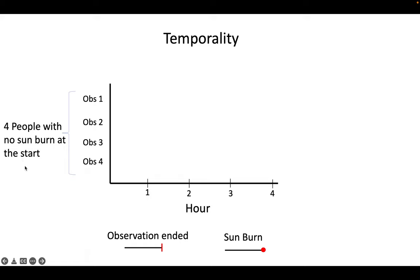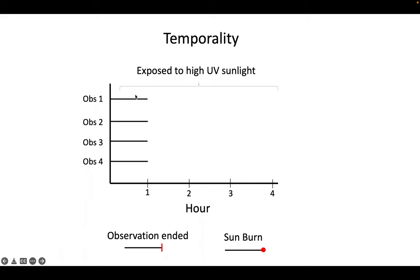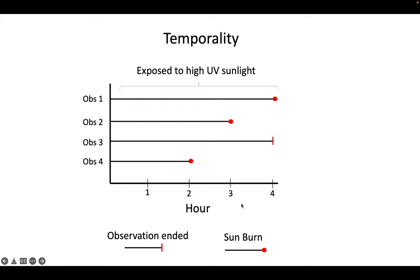Here I'm representing this with four people with no sunburn at the start, being followed for a number of hours — everyone with no sunburn at the start, all being exposed to high UV sunlight over this time. After hour one, still no one has a sunburn. After two hours, one person got a sunburn — that's what the red dot represents. After three hours, another person did. And after four hours when we stopped following them, one other person got a sunburn but one person didn't. We know the sunburn came second after exposure to light, which is a good indication of a temporal relationship supporting causality.